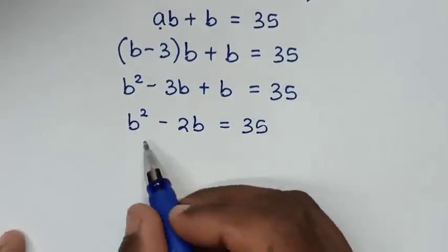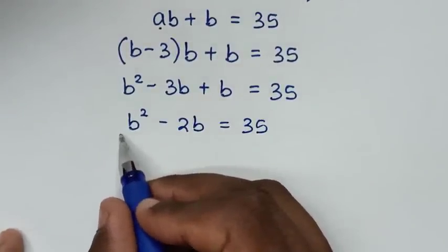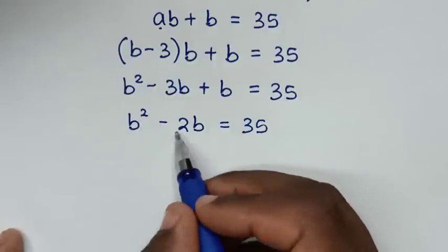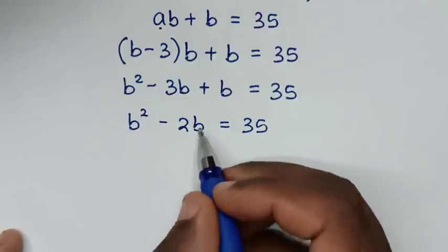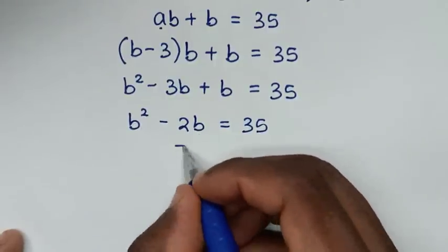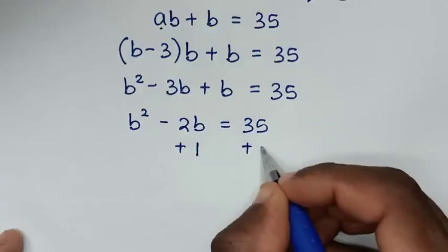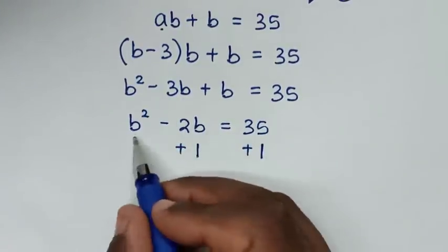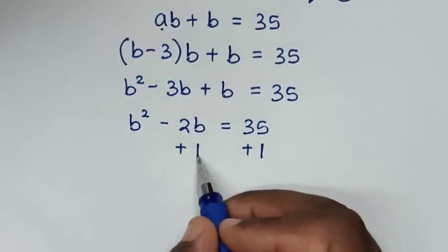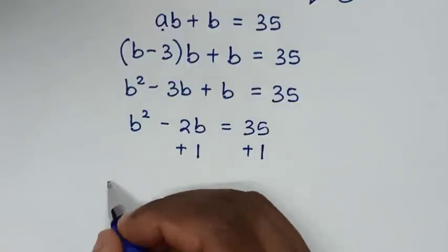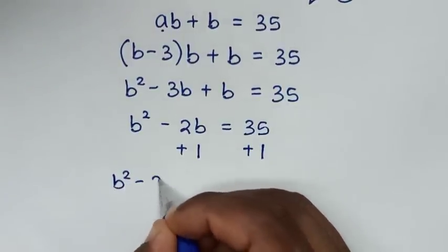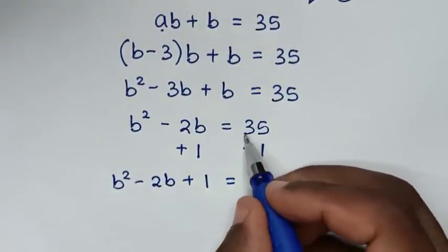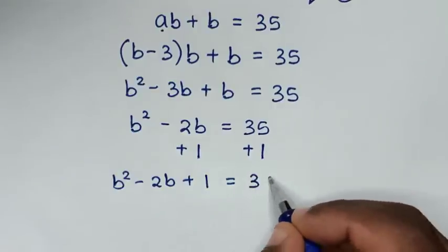To complete the square, from B squared minus 2B, we'll add 1 to both sides. So on the left side it will be B squared minus 2B plus 1, and on the right side, 35 plus 1 equals 36.